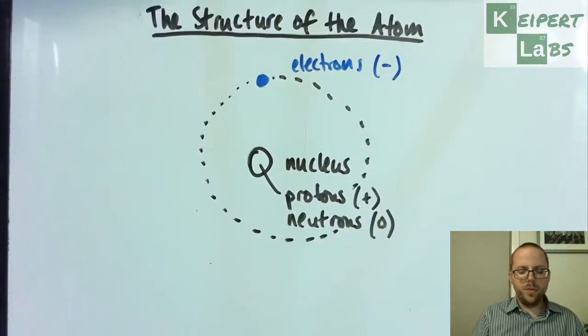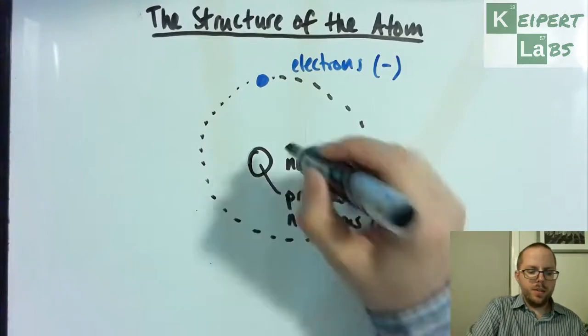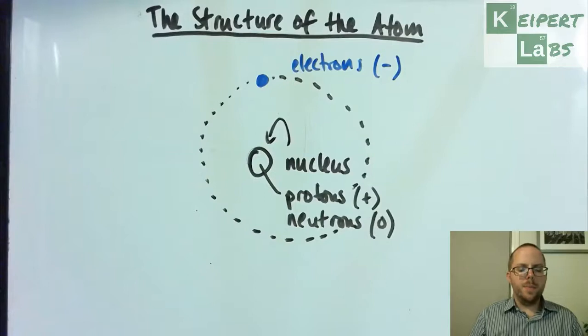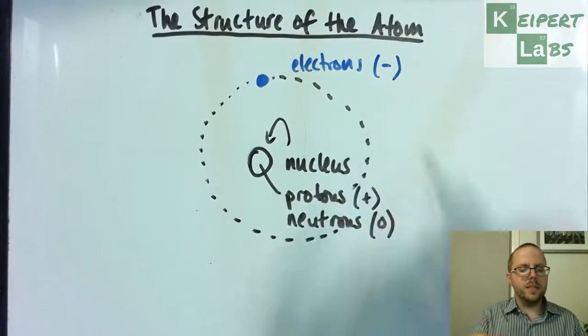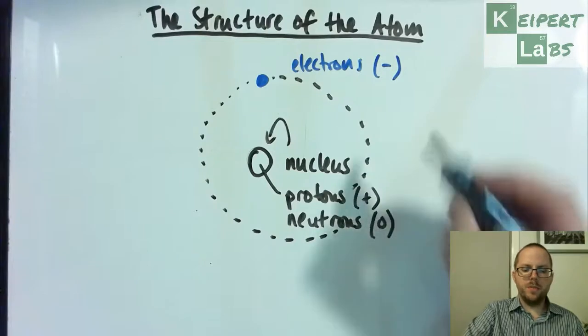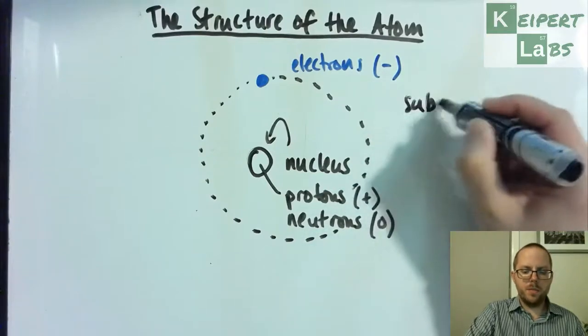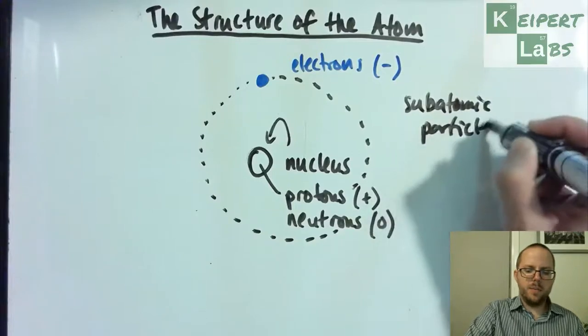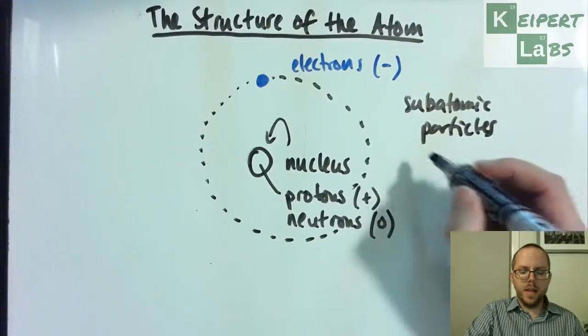So we've got three—this center is called the nucleus, and then orbiting around it we have these particles of electrons. Okay, so we've got three types of subatomic particles, little pieces contained inside the atom that are smaller than the rest of the atom.